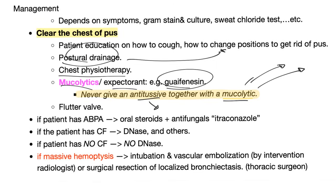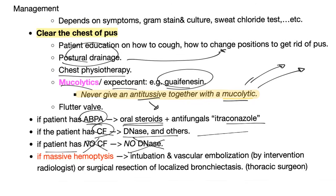If you see antitussive and mucolytic combined on the same medication — it's a marketing gimmick; avoid it. A flutter valve is also possible. If the patient has allergic bronchopulmonary aspergillosis, treat with oral steroids plus itraconazole. If the patient has cystic fibrosis, give DNase. If the patient does not have cystic fibrosis, do not give DNase — you'll make it worse.